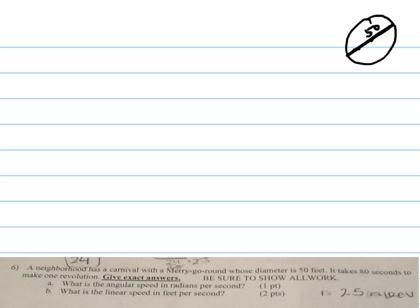It takes 80 seconds to make one revolution. So 80 seconds, 80 seconds equals one revolution. Let's try this differently. 80 seconds equals one revolution.